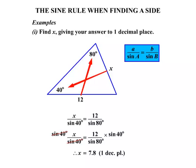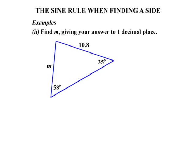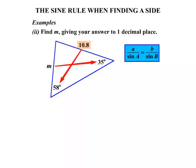Let's do a second example here. We need to find m giving your answer to one decimal place. There's our sine rule. First step: there's m, need to identify what it's matching up with. Directly across is 35 degrees, so there's your match up. The other side 10.8 matching up with the 58 degrees.